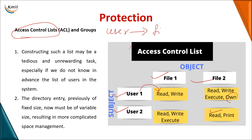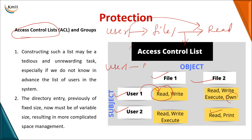For example, if user 1 tries to access file 1 and wants to perform a read operation, the operating system gets the access control list and checks whether user 1 can perform a read operation on file 1. If it is specified in the ACL, the user is allowed. If user 1 wants to execute file 1 but that permission is not in the ACL, the operation is denied.